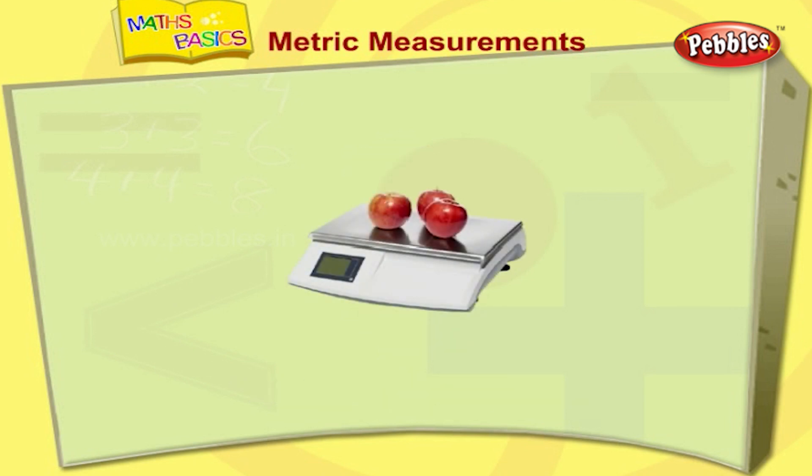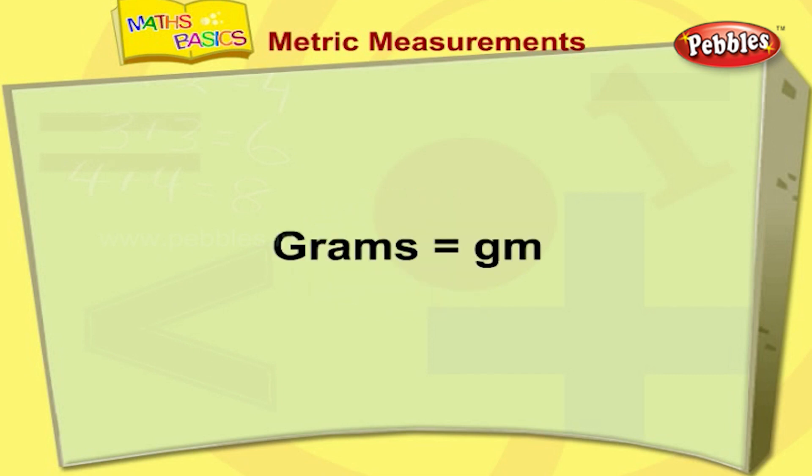We get things from the grocery by weighing them. Things are usually weighed in grams and kilograms. We denote grams as gm. Grams are used to weigh lighter objects. We denote kilograms as kg. Kilograms are used to weigh heavier objects.